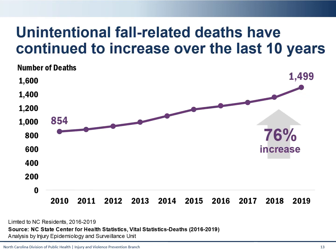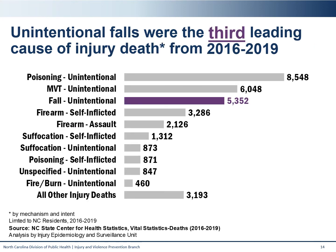Fall-related deaths have continued to increase over the last 10 years. This trend represents over a 75% increase in the count of fall-related deaths, going from just shy of 900 deaths a year in 2010 to now almost 1,500 a year in 2019. This increase is important to note in combination with the aging population in our state. Unintentional falls were also noted to be the third leading cause of injury death in the state among all age groups, representing over 5,000 deaths in the four-year period. Only unintentional poisonings and motor vehicle traffic incidents accounted for a higher proportion of overall injury death.